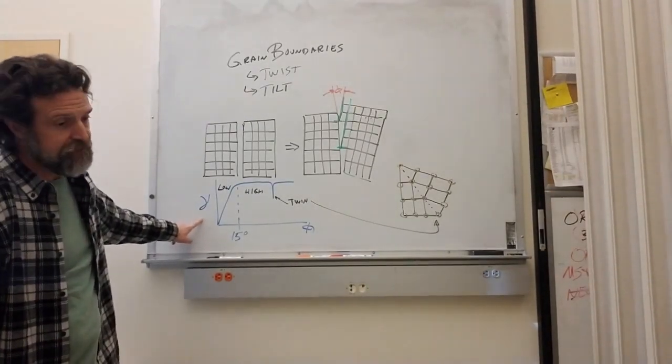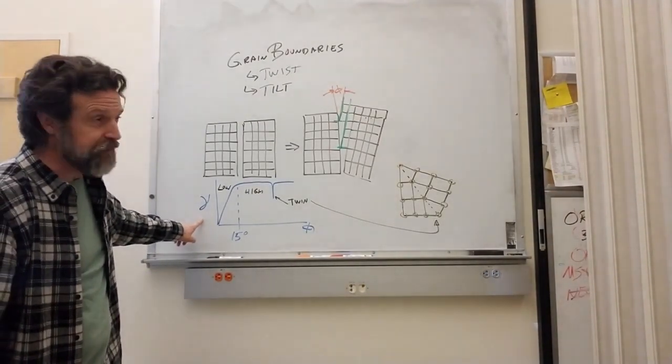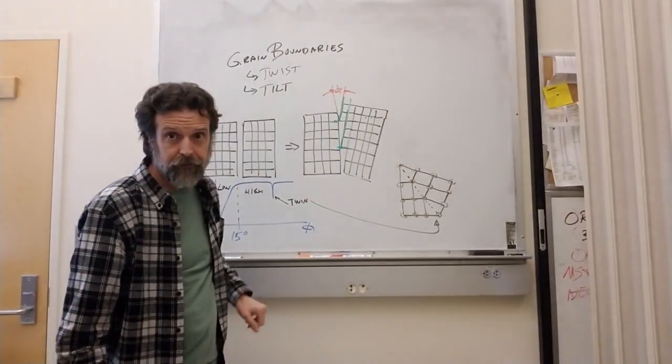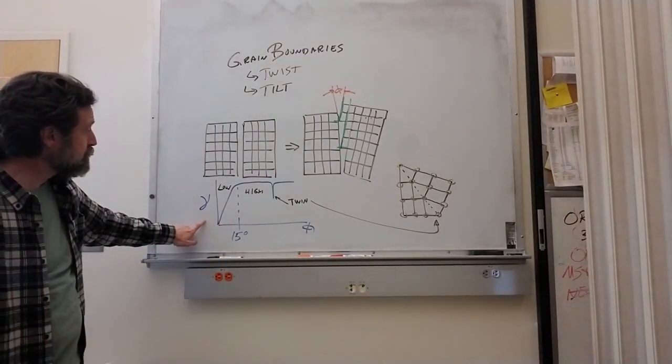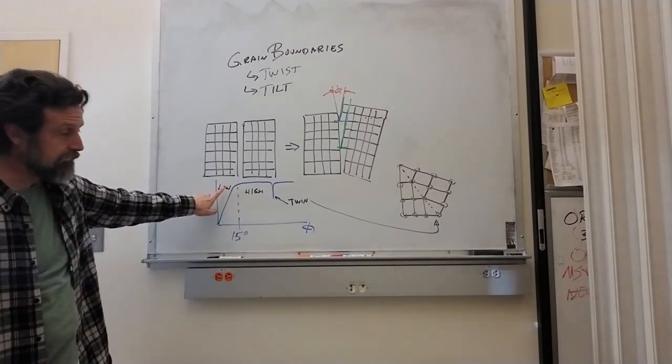This gamma is the interface energy or surface energy between the two. As we increase the angle, the surface energy or interface energy changes linearly.